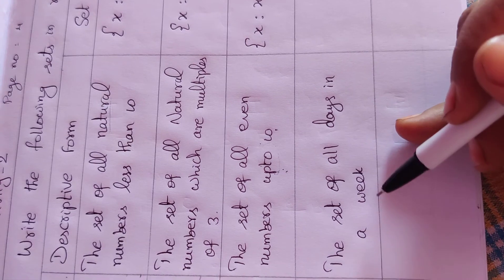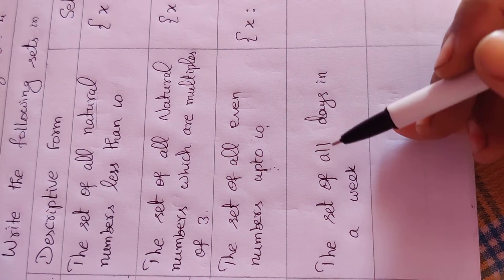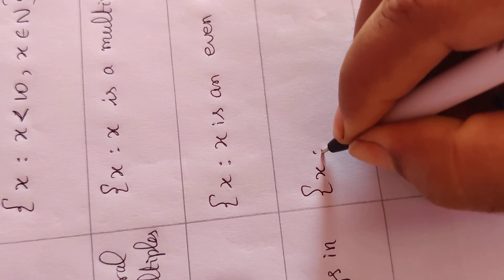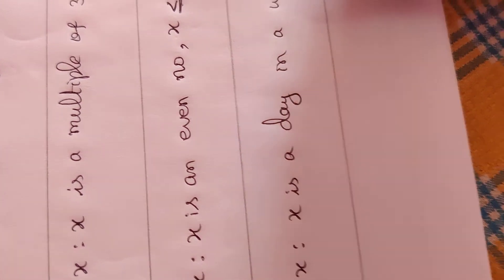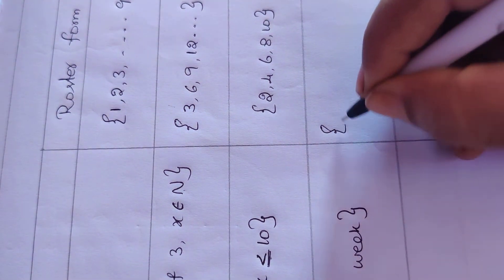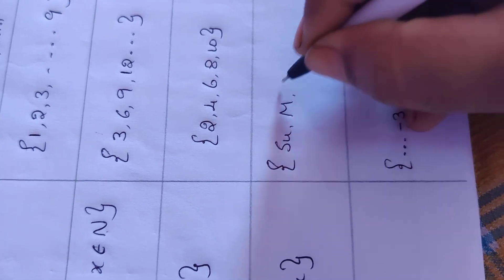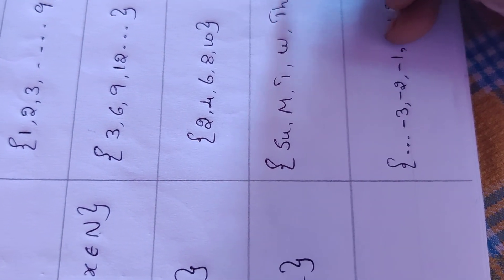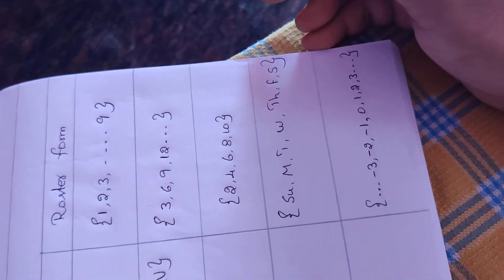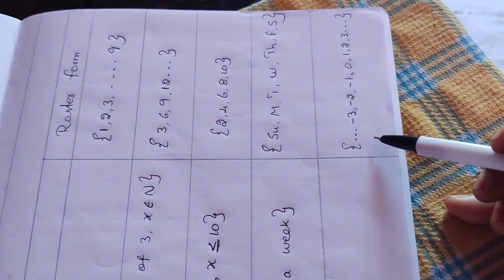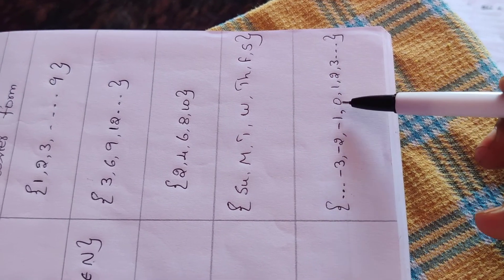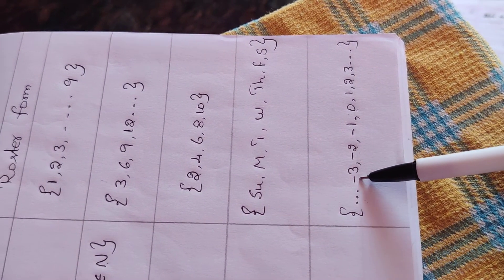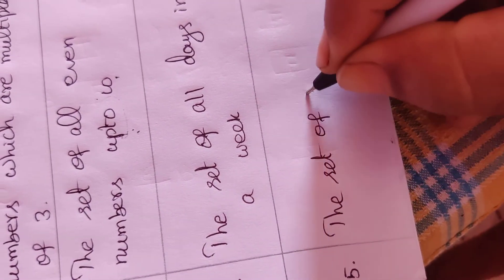Another example: the set of all days in a week. We know the types of numbers: natural numbers start from 1, whole numbers include 0, and integers include negatives. So this is the set of all integers. The descriptive form is very easy to say: the set of all integers.